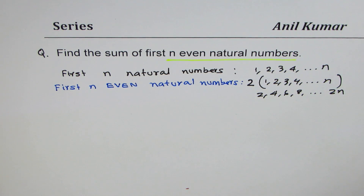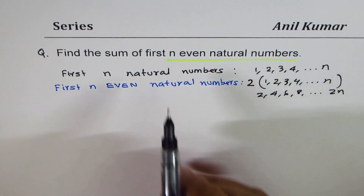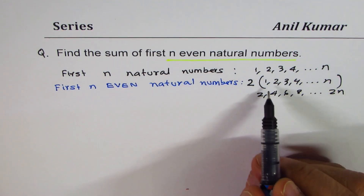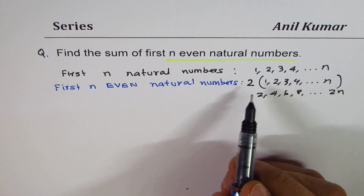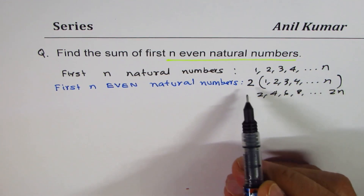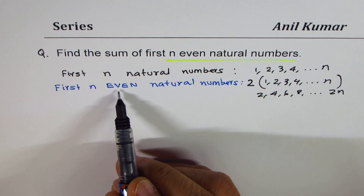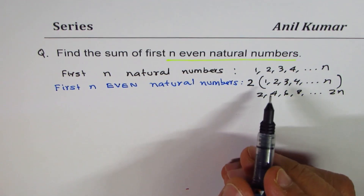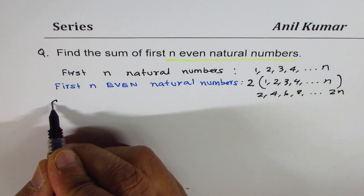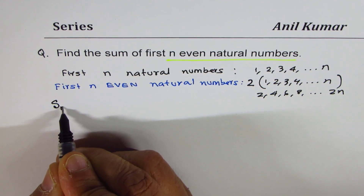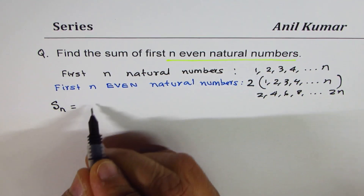I hope you have understood the question. Now let's solve it. Just as we found the definition, we'll go about by first finding the sum of these numbers. It is twice the sum of natural numbers — twice the sum of first n natural numbers gives us the even natural numbers.